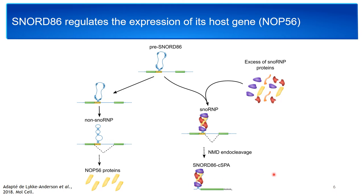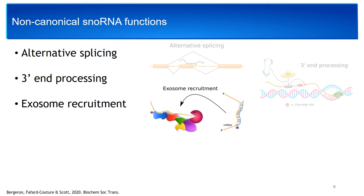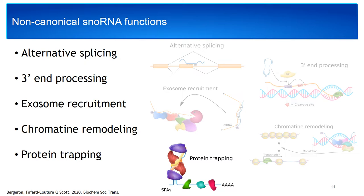This is not the only non-canonical function attributed to snoRNAs. Indeed, in the last two decades, snoRNAs have been implicated in a wide variety of cellular processes, including, among others, alternative splicing, 3' end processing, exosome recruitment, chromatin remodeling, and protein trapping. And even though snoRNAs have been shown to be involved in many cellular processes, only a handful of snoRNAs have been shown to have non-canonical functions.